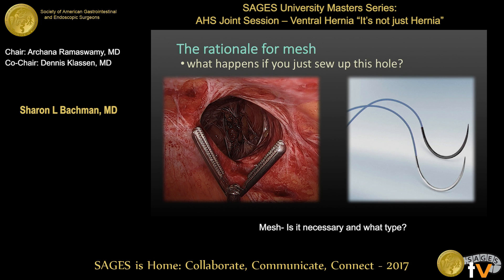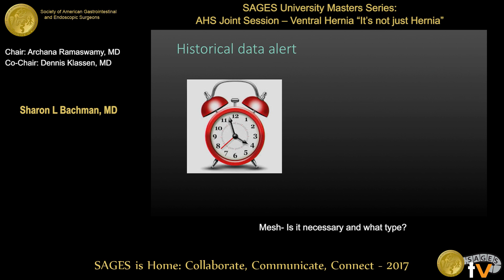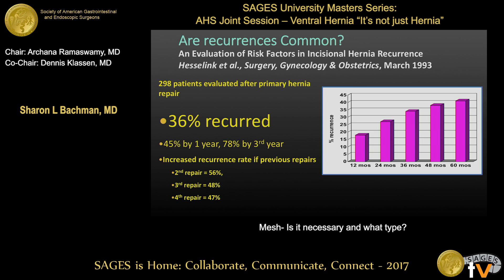Why are we using this stuff? Why do we convince our patients that we need to put a piece of plastic in them and not just sew up the hole? When we go back and look at data from the 90s, we can see there is a very high rate of incisional hernia occurrence after primary repair. In one particular study, looking at an average of about 30 months after surgery, they found that a third of patients had recurred. Following patients out to 60 months, they were getting to a 41% rate of recurrence. When over 40% of your patients are recurring, we have a technique problem.